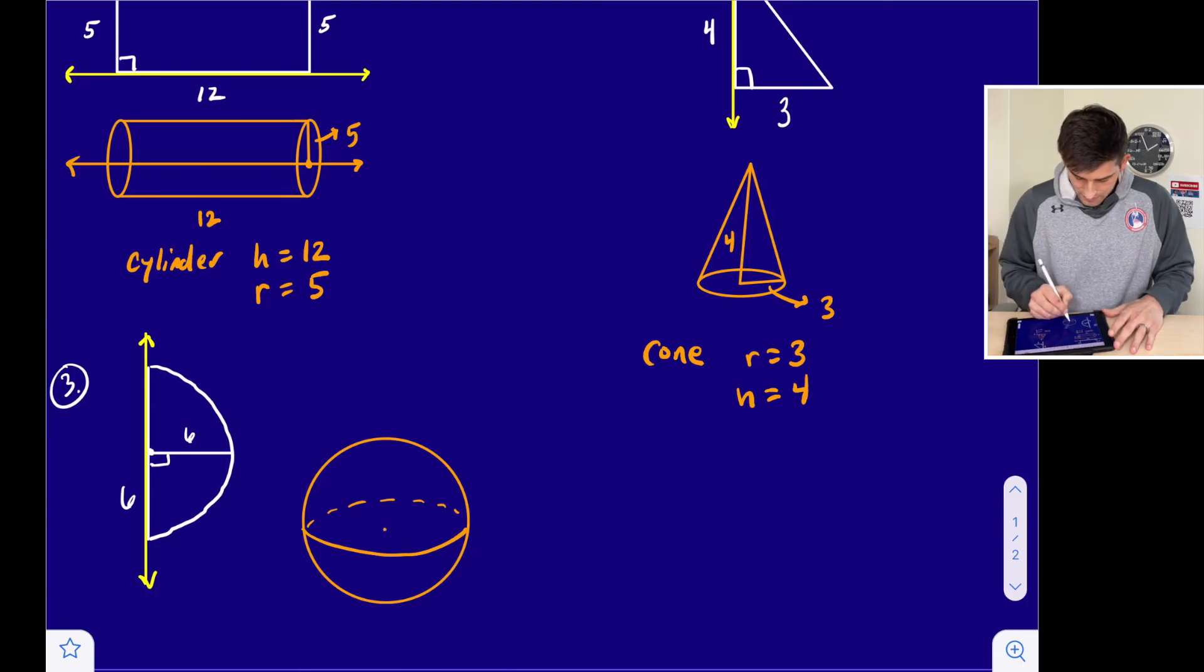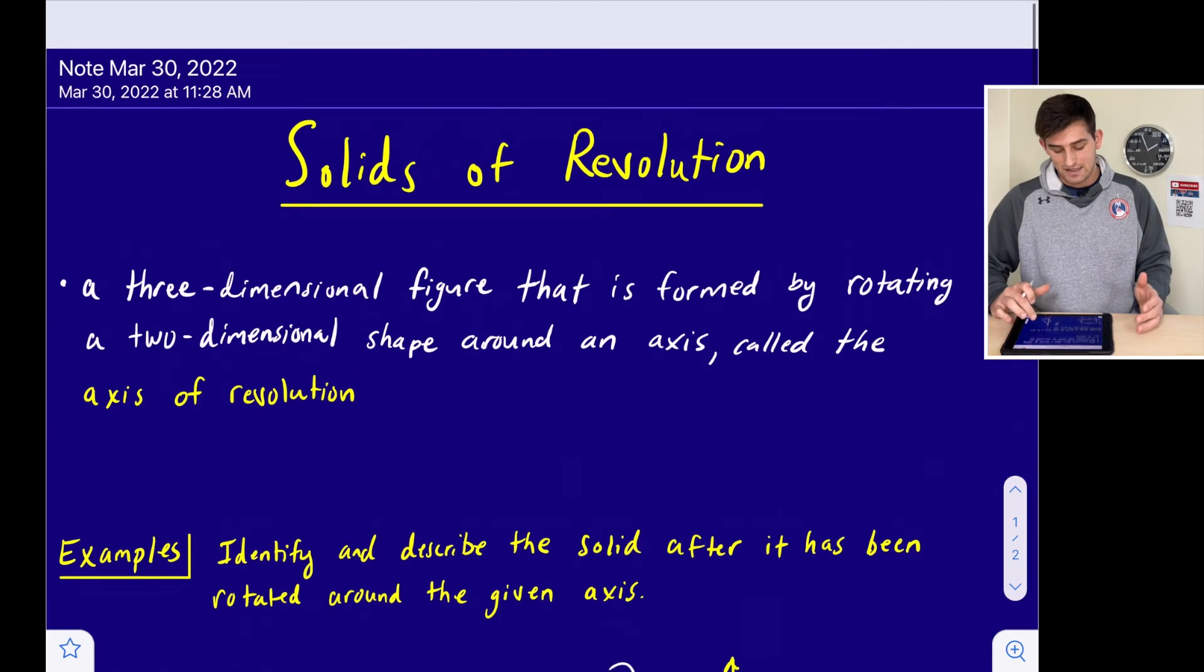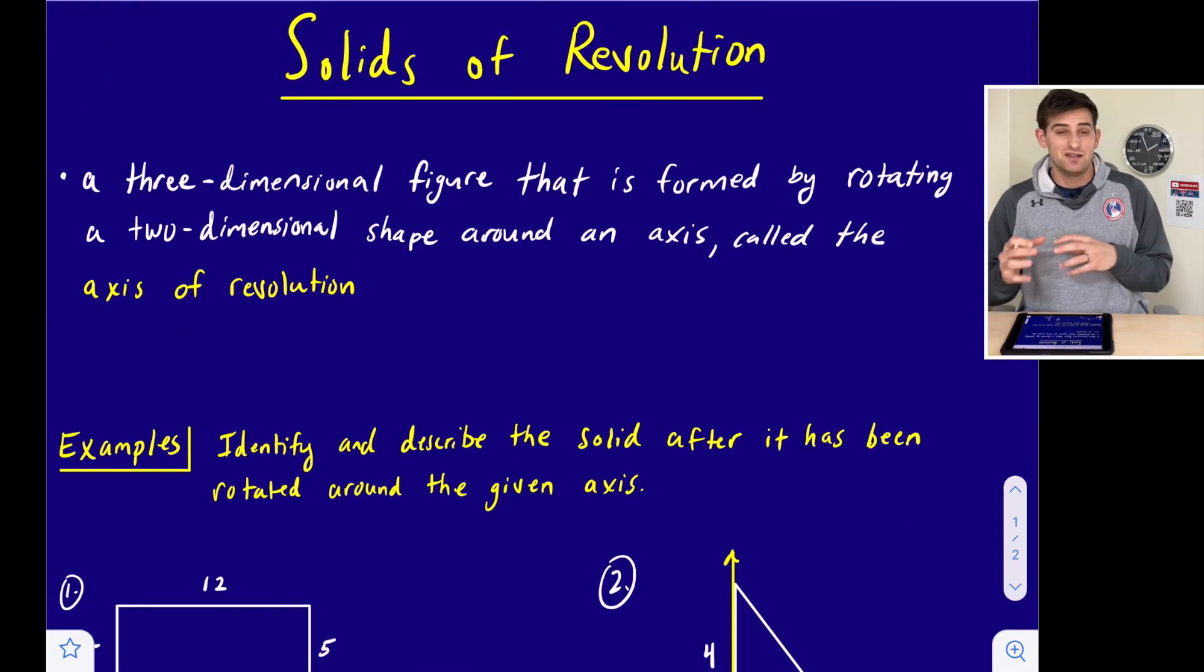All right. So now if we think about us having a center point here and drawing out to its edge, then we would say this is six. So once we rotate our semi-circle around this axis of symmetry, it's going to give us a sphere, and this sphere will have a radius of six. And that is how you describe solids of revolution.